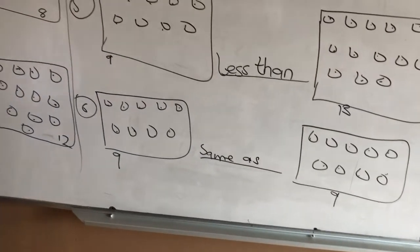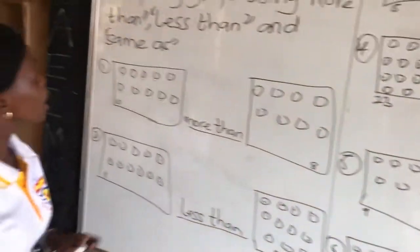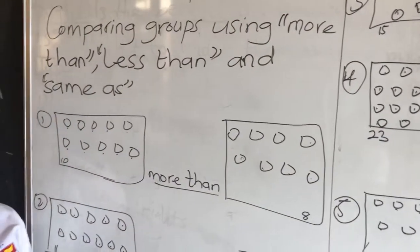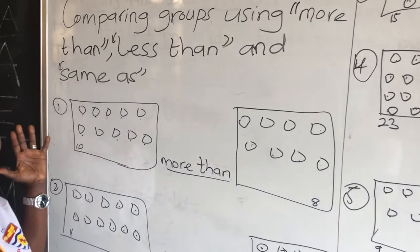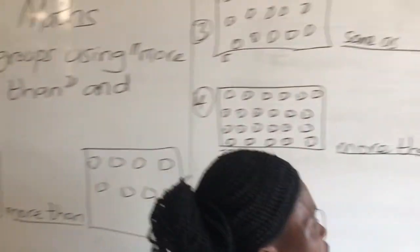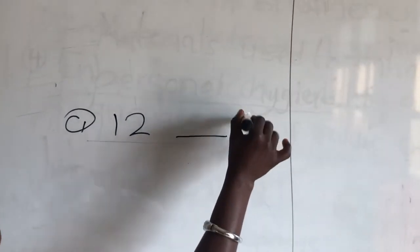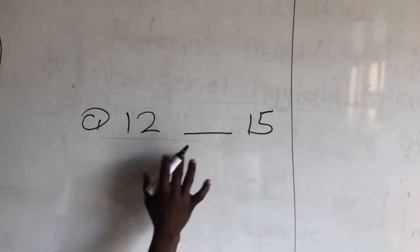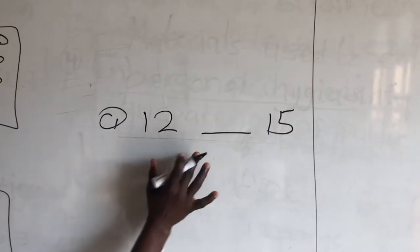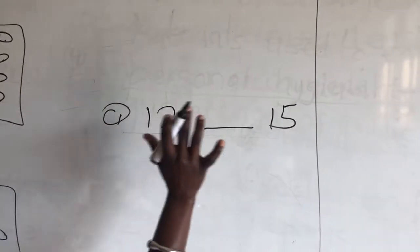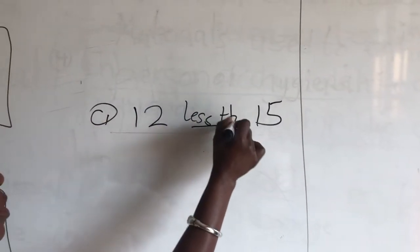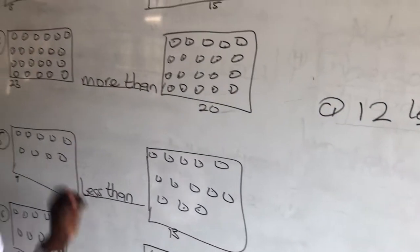So today we are talking about comparing groups using more than, less than, and same as. Don't forget — always read from your left side. For example: 12 and 15. What will be your answer? 12 is less than 15, so you write: less than. Always read from your left side.